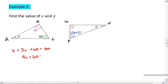4X equals 120, meaning that X equals 30.